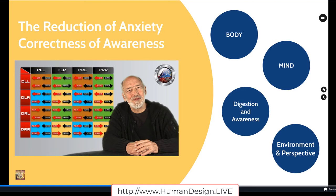We're moving into the four transformations that variable is taking us through. What Ra says about this is that variable addresses what strategy and authority can't — and that is the correctness in the realms of your mind and your awareness. Strategy and authority doesn't address that. Have you noticed? I'm experimenting with Human Design and I'm making decisions better, but my mind is still really stressing me out. This is where the four transformations — the radical transformations — help us mitigate some of these shadows from the mind to clean off the distortion.